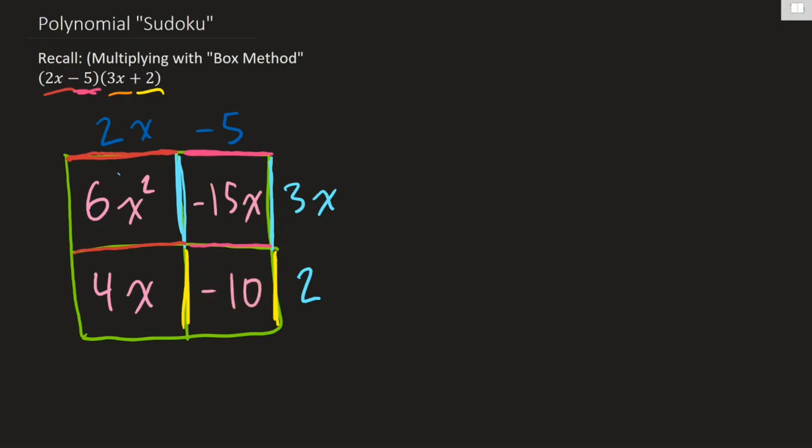And then what you do in your last step, you sort of take your diagonals and you add up along your diagonals. So those two combine, those two combine, that one combines. So 6x squared, negative 15x plus 4 is negative 11x minus 10. And so when you multiply those two, you get 6x squared minus 11x minus 10.